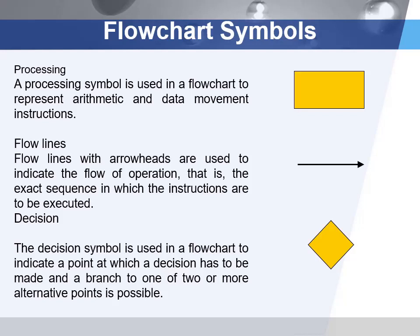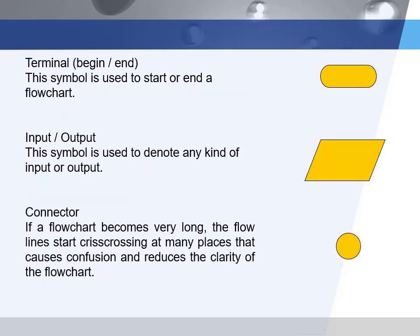The diamond symbol is the decision symbol, meaning you have to make a decision at that point. It can have two outputs: true or false. The terminal or terminator shape tells you where the flowchart begins and ends — it shows the entry point and you fill it with words like 'start' or 'begin'. A flowchart usually has one starting point but can have as many ending points as needed. The parallelogram is used for input and output. A small circle is used as a connector, so if a flowchart is very large, you can use it to connect different parts.